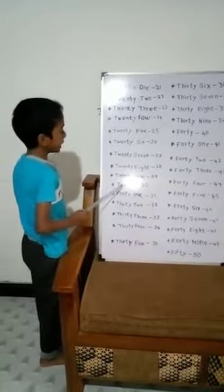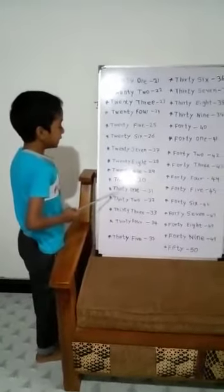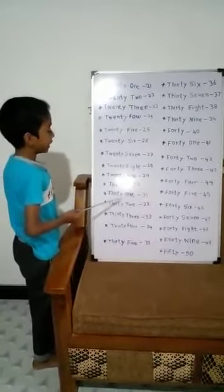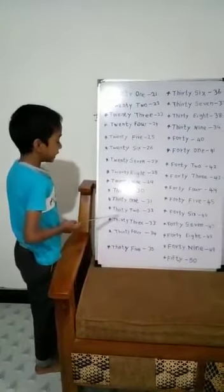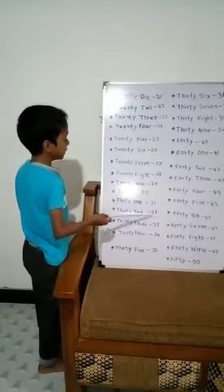Thirty, 30. Thirty, one, 31. Thirty, two, 32.